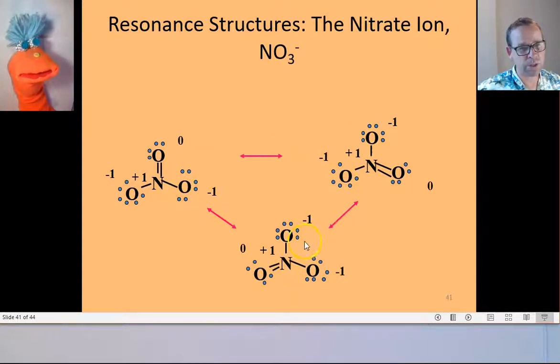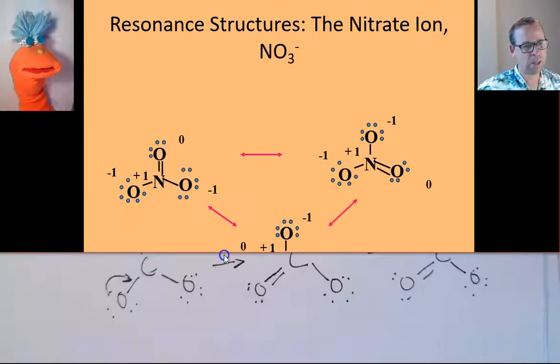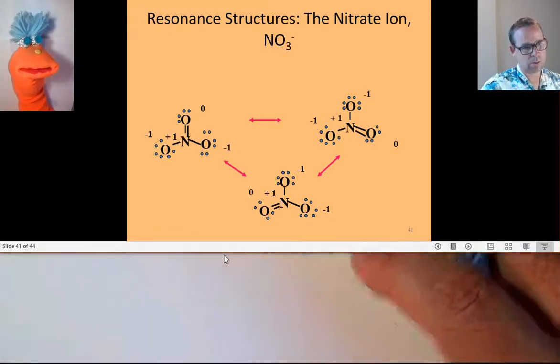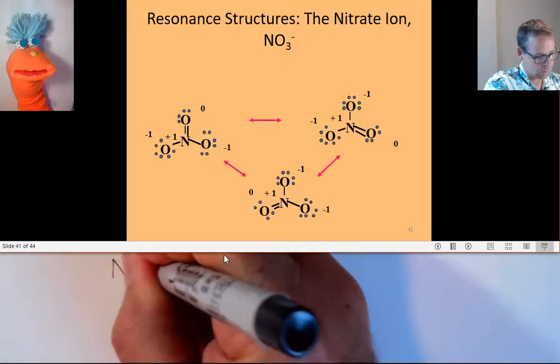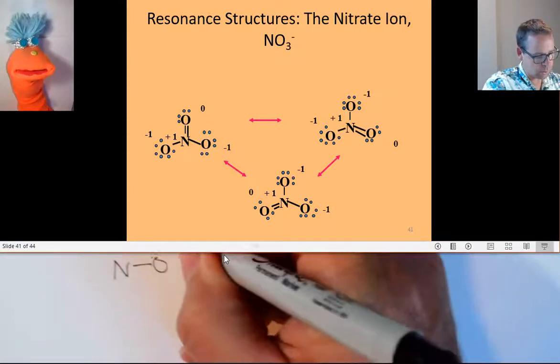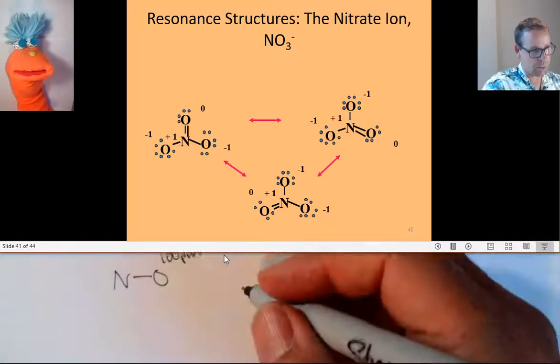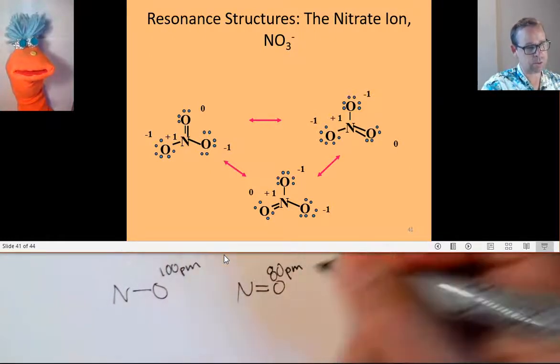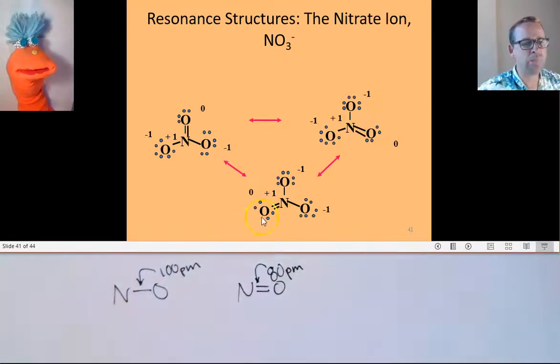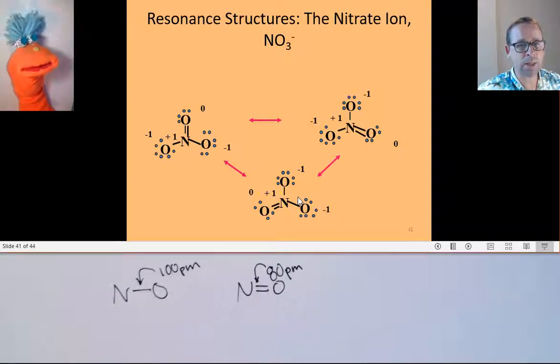Now, because there's these three different resonance structures, we can predict what the average bond length would be, for example, between this nitrogen and this oxygen. If I were told that a nitrogen-oxygen bond length is 100 picometers, and if I were told that the nitrogen-oxygen double bond length is 80 picometers, then I could use my resonance structure here to predict what the bond length would experimentally be on a nitrogen-oxygen bond in the nitrate molecule, or nitrate polyatomic ion.